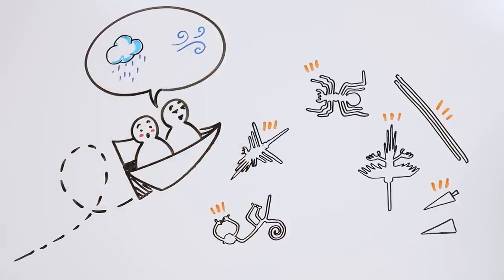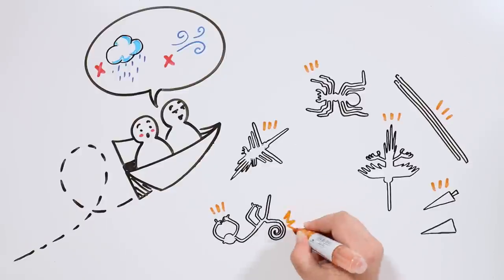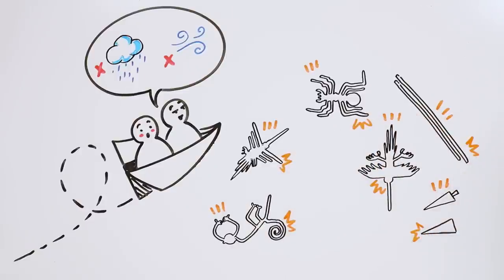It barely rains in there, and the hot air makes the wind change its trajectory, protecting the lines from erosion.